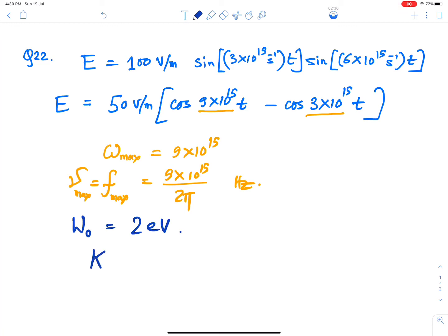So KE_max equals h ν_max minus W₀. So h in electron volt seconds multiplied by 9×10¹⁵ divided by 2π minus 2 electron volts.